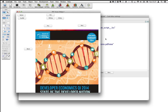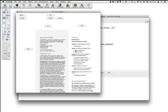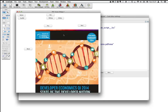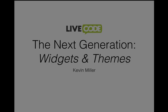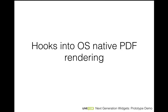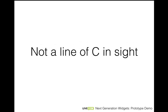Here we have a specially modified version of LiveCode that contains the first implementation of our Widgets architecture. It's not a lot to look at at the moment. You can see that we have a PDF here on the screen, and we're able to navigate forwards and backwards. What we're doing here is we're hooking into the OS native PDF rendering, but what's really exciting and impressive about this is that there isn't a single line of C code in sight.